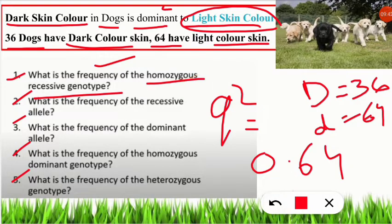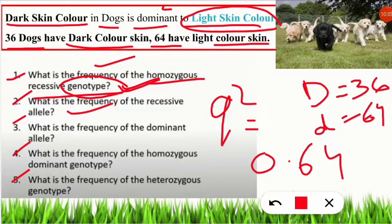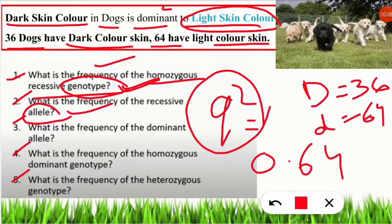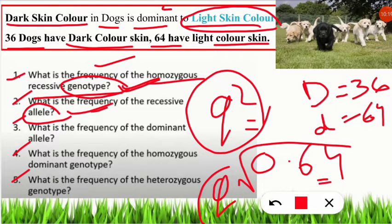Question 2: What is the frequency of the recessive allele? The recessive allele frequency is Q. Since we already found Q² = 0.64, we simply take the square root: Q = √0.64 = 0.8. So the frequency of the recessive allele is 0.8.